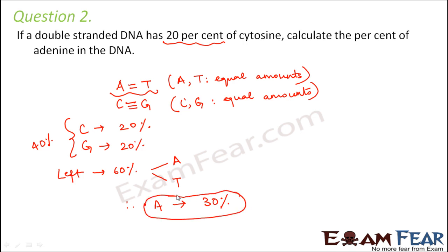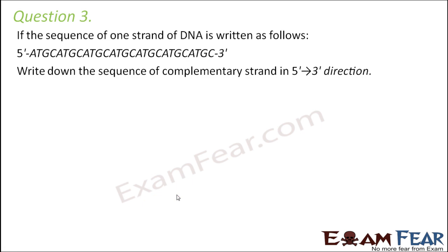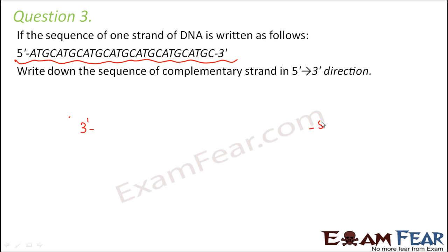Question number three: if the sequence of one strand of DNA is written as 5' to 3', write down the sequence of the complementary strand in the 5' to 3' direction. If this strand is running from 5' to 3', the other one will be running from 3' to 5' because the two strands of DNA are anti-parallel to each other.